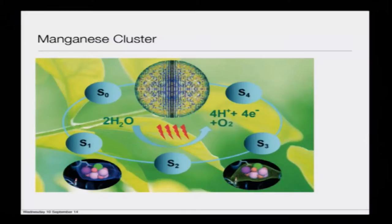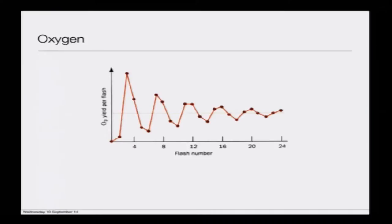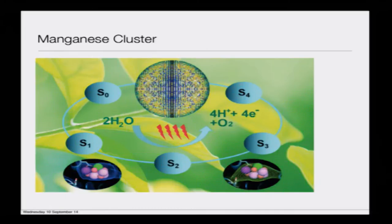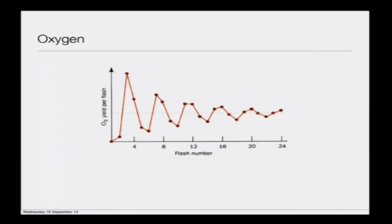These are the different states of the manganese cluster. There is something important called the Kok cycle: it shows that for every flash of light there is not one oxygen evolved — actually after every four flashes there is one oxygen. The oxygen yield maximizes after every fourth flash. This means water is split in four stages — donating electrons, protons, and oxygen in a four-cycle process. Looking at the graph, at flash 4, 8, 12, 16, 20 — at every fourth interval there is maximum emission of oxygen.